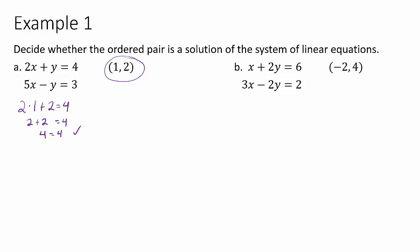We do have to check both of them. Well, we have to check both of them if one of them works. If the first one didn't work, we could stop and say it won't work. Since the first one worked, we have to do both. So 5 times 1 is 5, 5 minus 2 is 3. 3 does, in fact, equal 3. And so since they are both true, we could say that, yes, it is a solution.